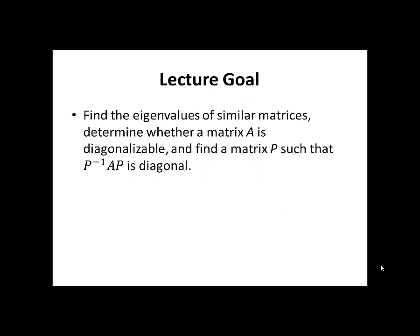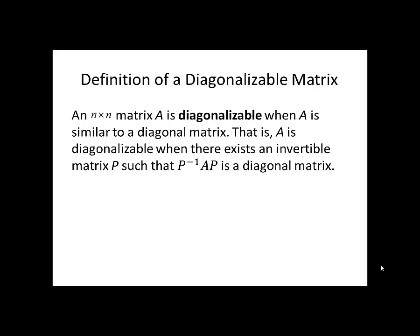The lecture goals are: find the eigenvalues of similar matrices, and determine whether a matrix A is diagonalizable and find a matrix P such that P inverse AP is diagonal. An N by N matrix A is said to be diagonalizable if A is similar to a diagonal matrix, i.e., there exists an invertible matrix P such that P inverse AP is a diagonal matrix.